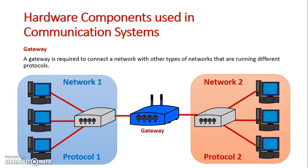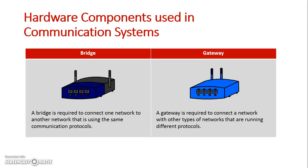In summary, a bridge is used to connect different networks together but running the same protocol, and a gateway is used to connect different networks together but running different protocols.